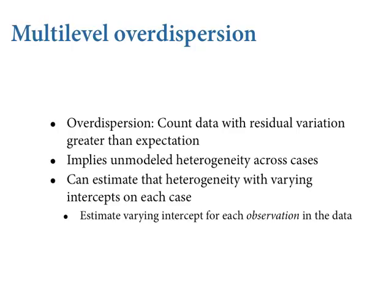I have yet to see an ecological dataset that does not have over-dispersion. You can get under-dispersion through actual correlated effects, autocorrelation, but I haven't seen it in a real dataset. What varying intercepts let you do is model that heterogeneity - they give you distinct intercepts for each case. In a multilevel context, we estimate the population of those intercepts and get a variance parameter for how much over-dispersion there is. So sigma in the varying intercepts distribution is a measure of over-dispersion. All the code for this example is in the book.